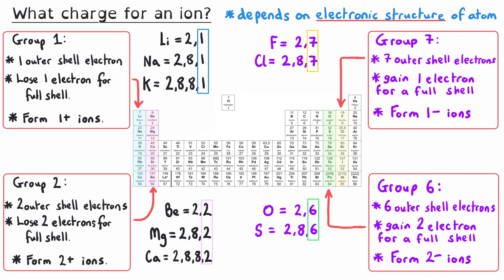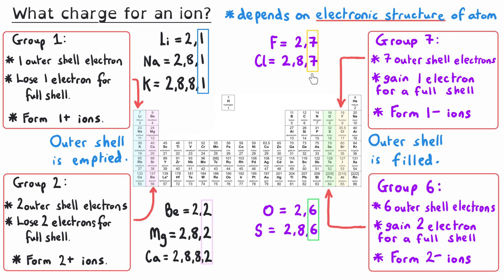For metal atoms, when they become ions they lose their outer shell electrons, so their outer shell is now empty. This means their second-to-last shell, which was already filled, becomes their full outer shell. For non-metals, when they become ions they simply gain enough electrons to completely fill their outer shell. So all of these atoms, when they become ions, have the electronic structure of the noble gases.